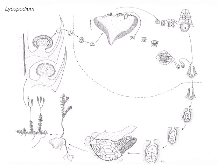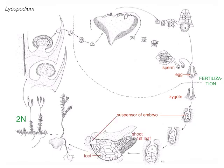Let's start with Lycopodium. Remember, Lycopodium is the homosporous one. We'll have sperm and egg, and they get together at fertilization and make a zygote. That zygote's first division makes a suspensor cell of the embryo, and then it makes an embryonic cell. The embryonic cell goes on to make the rest of the embryo. So there we have an embryo with a foot and a shoot and a first leaf, and the suspensor cell is still there.